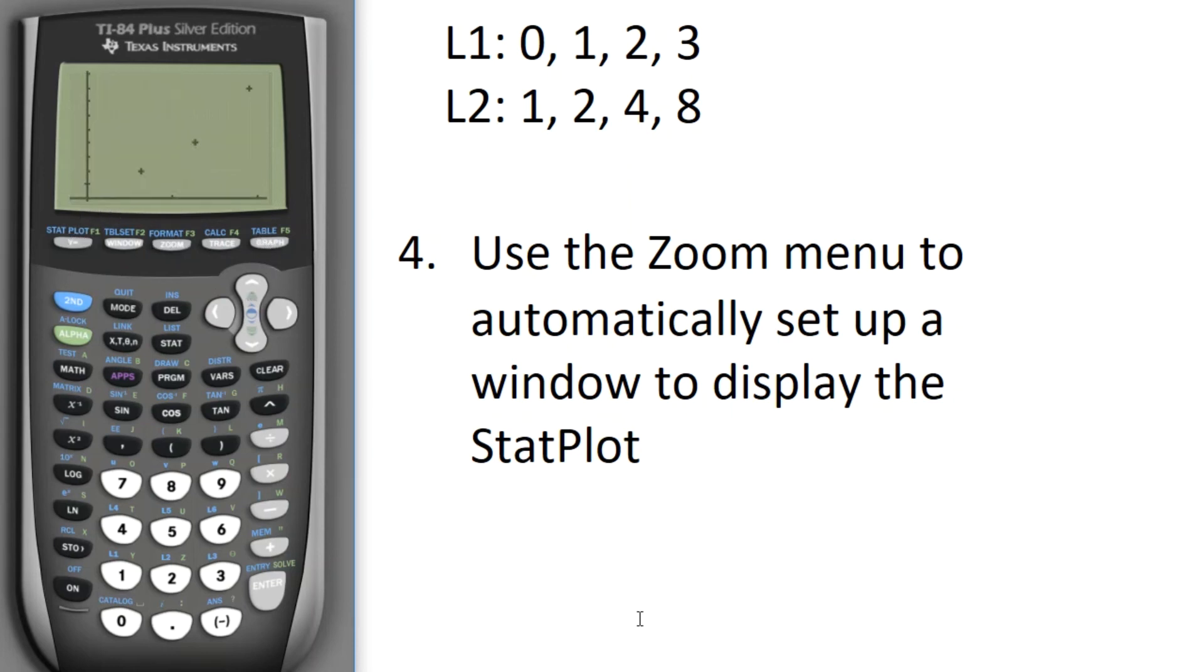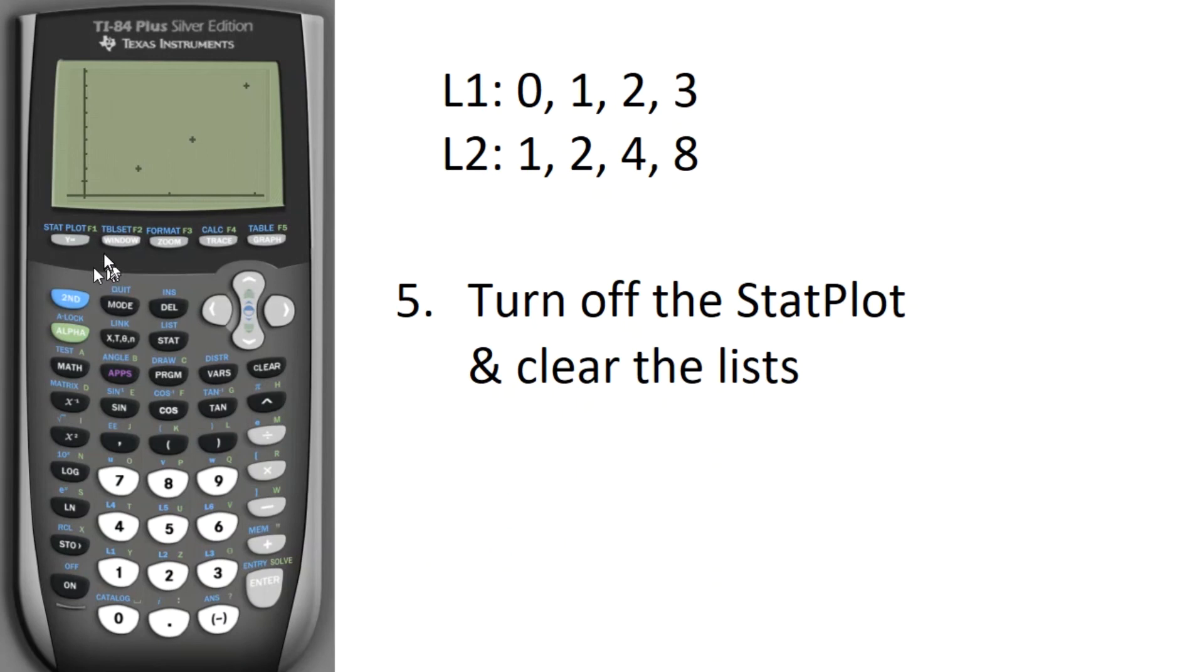And that gives me my statistical graph. If I want to see what the window is automatically set to, I could hit the window key and see the numbers there the calculator decided. Let's do second quit to get back to the home screen.